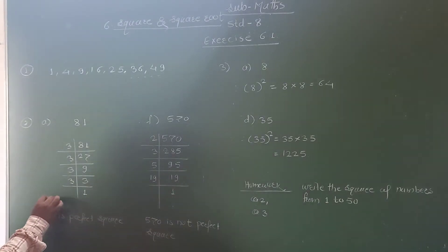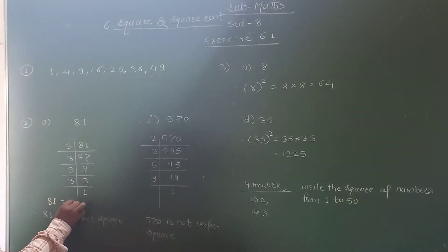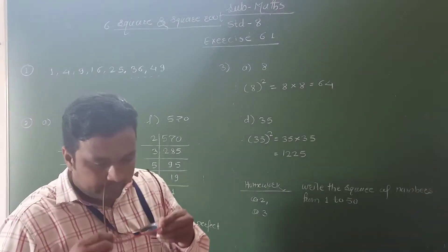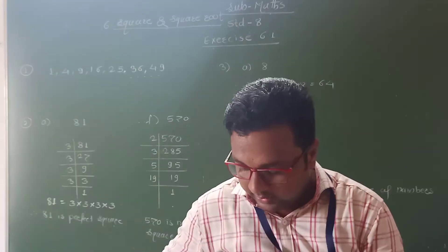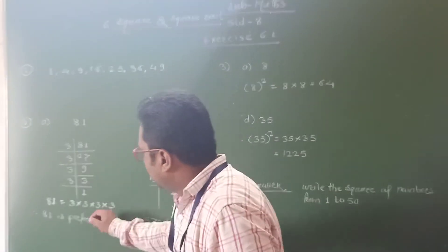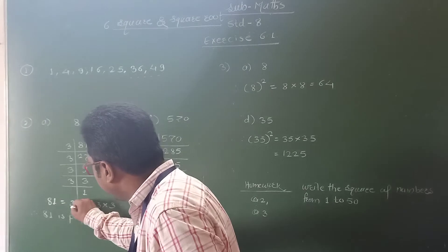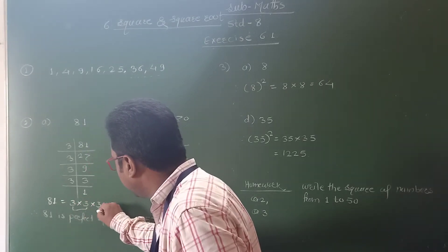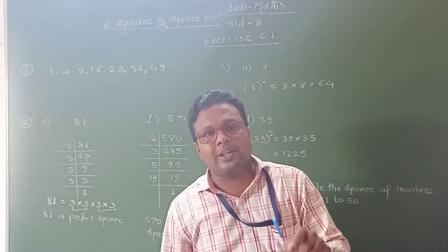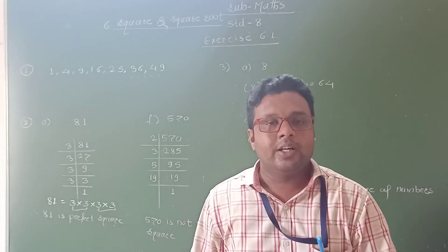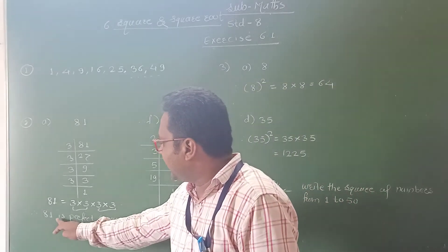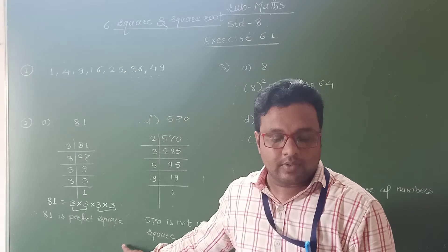Now you can write it as: 81 = 3 × 3 × 3 × 3. See that in these prime factors, the prime factors are in pairs — first pair of 3, and then another pair of 3. If the prime factors of the given number are in pairs, then that number is a perfect square number. So we can say 81 is a perfect square.